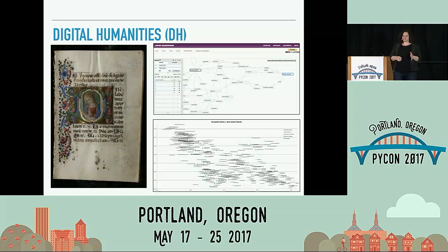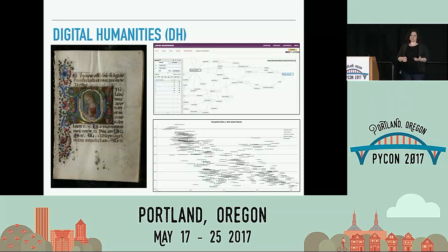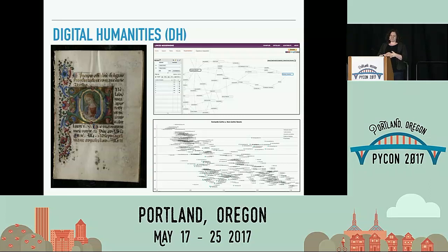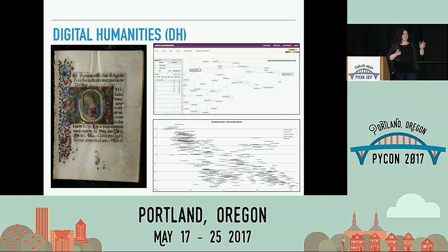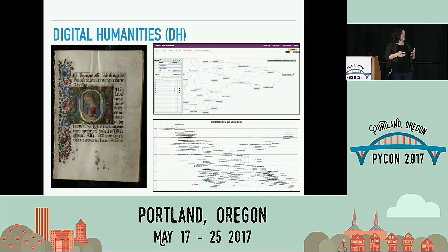Our project belongs to a field of study called the digital humanities, basically because we're using computers to do humanities research. In this case we're doing literary studies, but digital humanities involves things like history, art history — anything in the realm of humanities. It's a relatively new field of scholarly study, which provides humanists with new tools, new methodologies, and new theory as well. Examples of DH projects include digitizing medieval manuscripts to create digital archives, network visualization of relationships between authors in the modernist period, and analyzing text using statistics to see what genre things belong to.